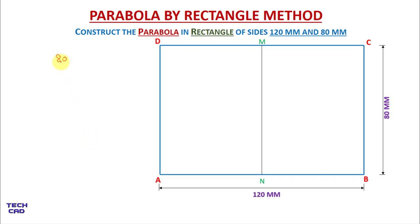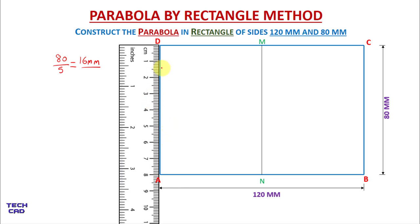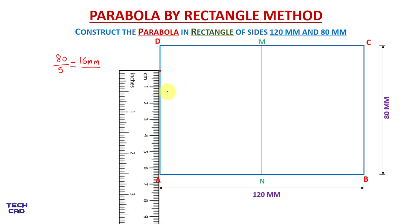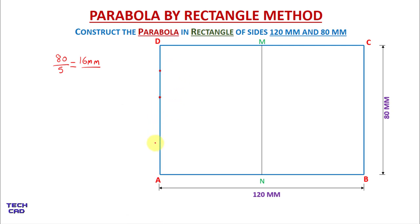Since we have 80 mm and we are dividing into five equal divisions, each division will be 16 mm. With the help of scale I will divide it into 16 mm intervals. In the same way I will divide this AD line into five equal divisions. Now I can give the namings — this is 1, 2, 3, and 4.